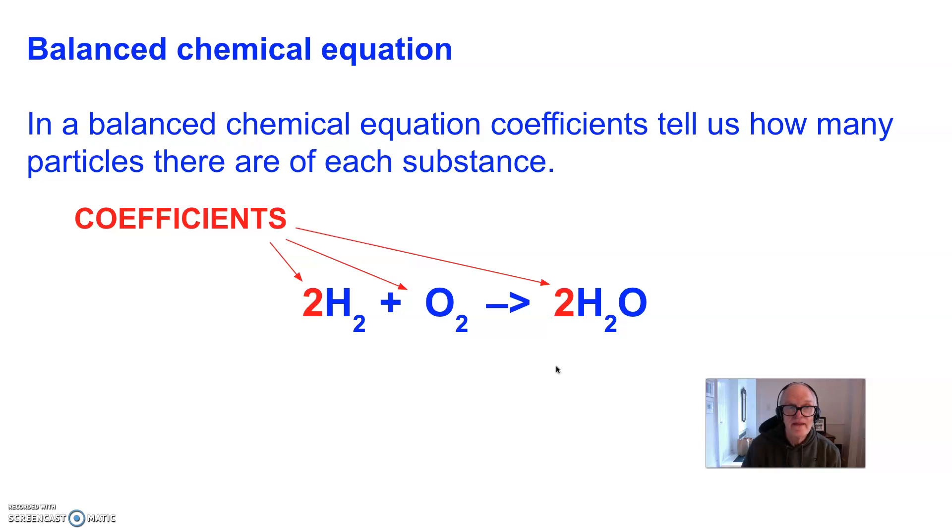So you see that the coefficients are the large numbers that come before the chemical formulas. There is a coefficient 1 in front of the O2, but when the coefficient is 1, it doesn't get written down. The coefficient's not part of the formula, but it does tell us how many particles react.